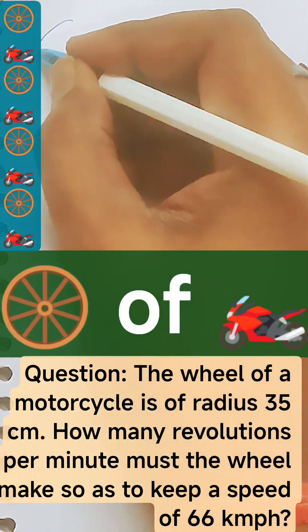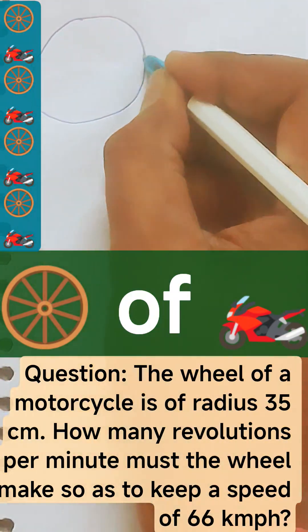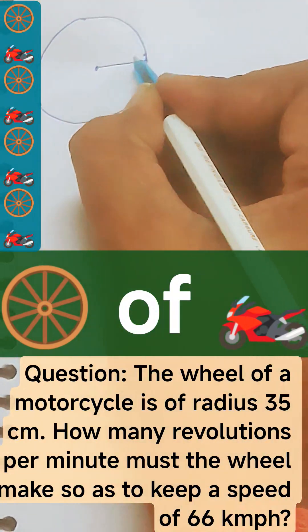The wheel of a motorcycle is given to you. This is the wheel of a motorcycle, right, and this wheel is having a radius of 35 centimeter.